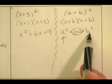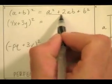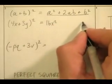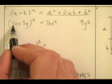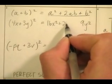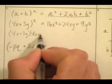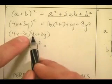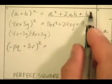Knowing this pattern, let's do another one. For (4x+3y)²: square the first term — 16x squared; square the last term — 9y squared; and 2ab is double the product of 4x and 3y. 4x times 3y is 12xy, doubled is 24xy. To verify: (4x+3y)(4x+3y) gives 16x squared, 9y squared, and 12xy plus 12xy equals 24xy. Same result.